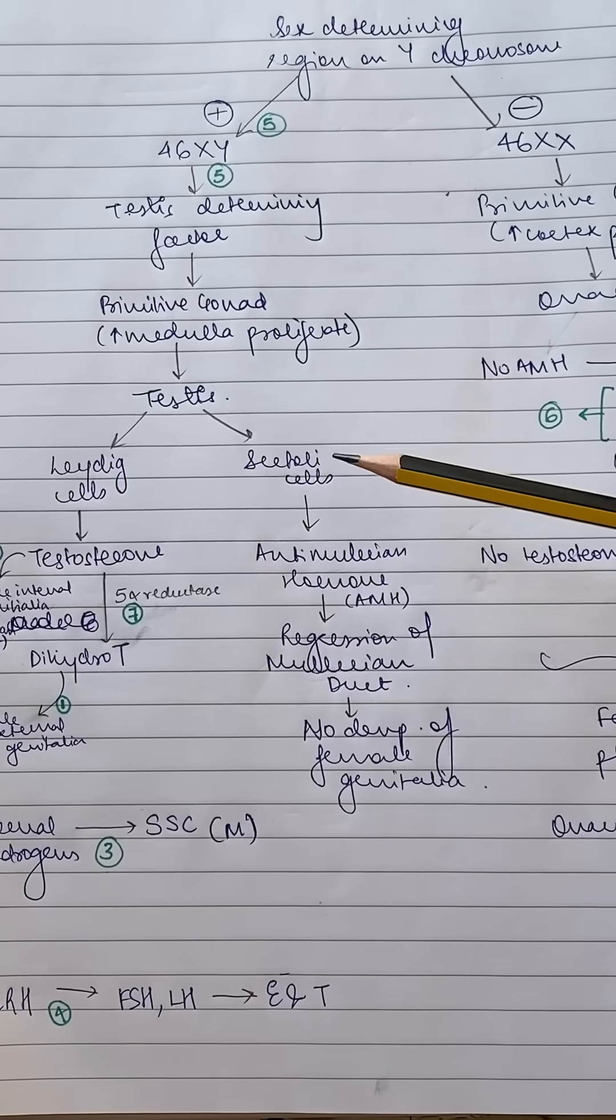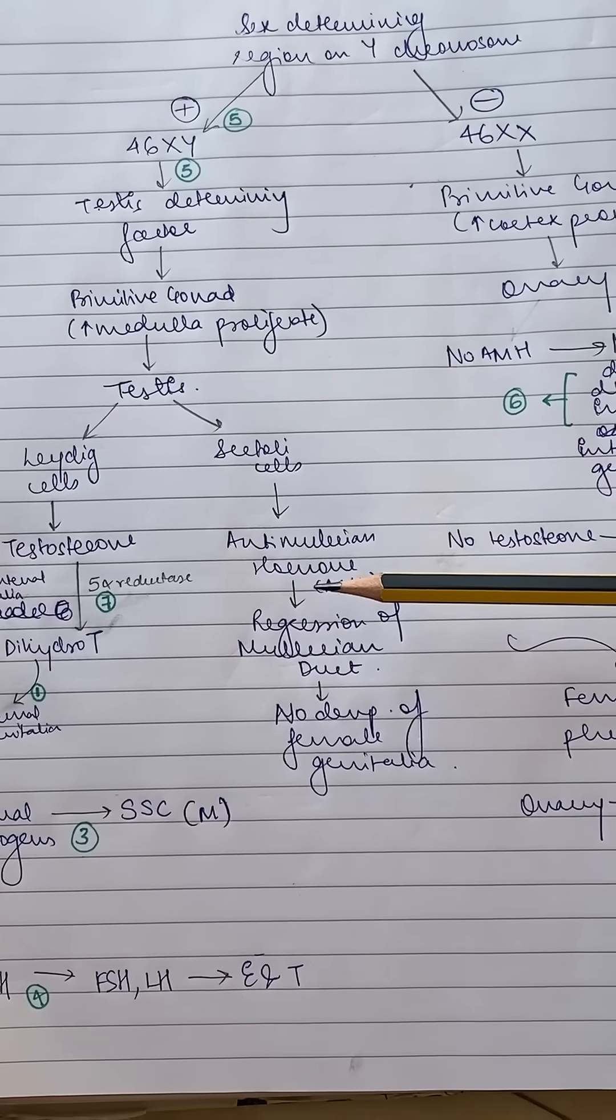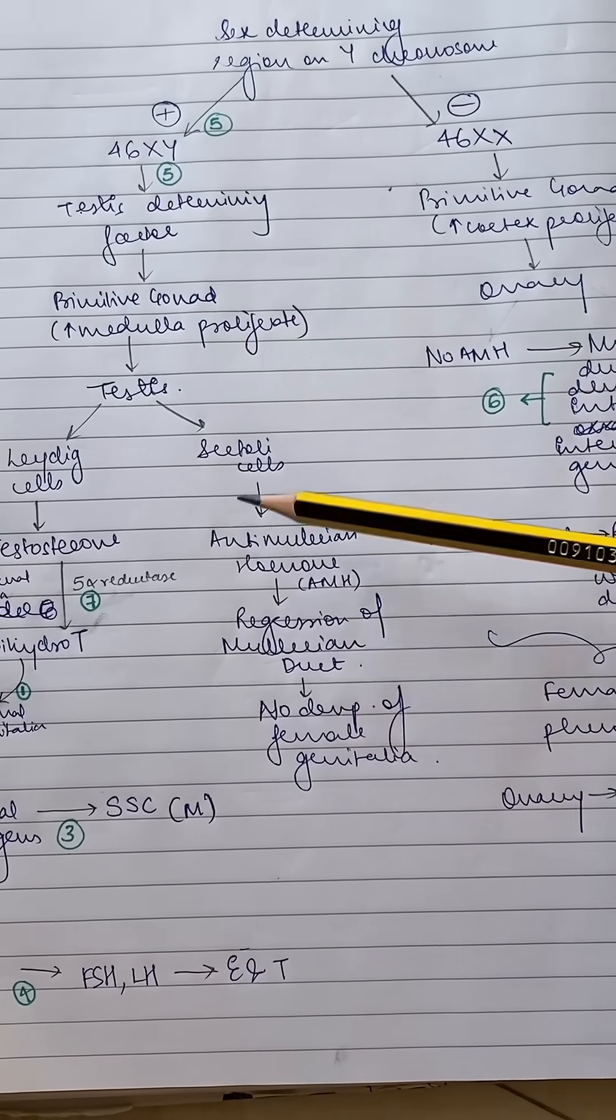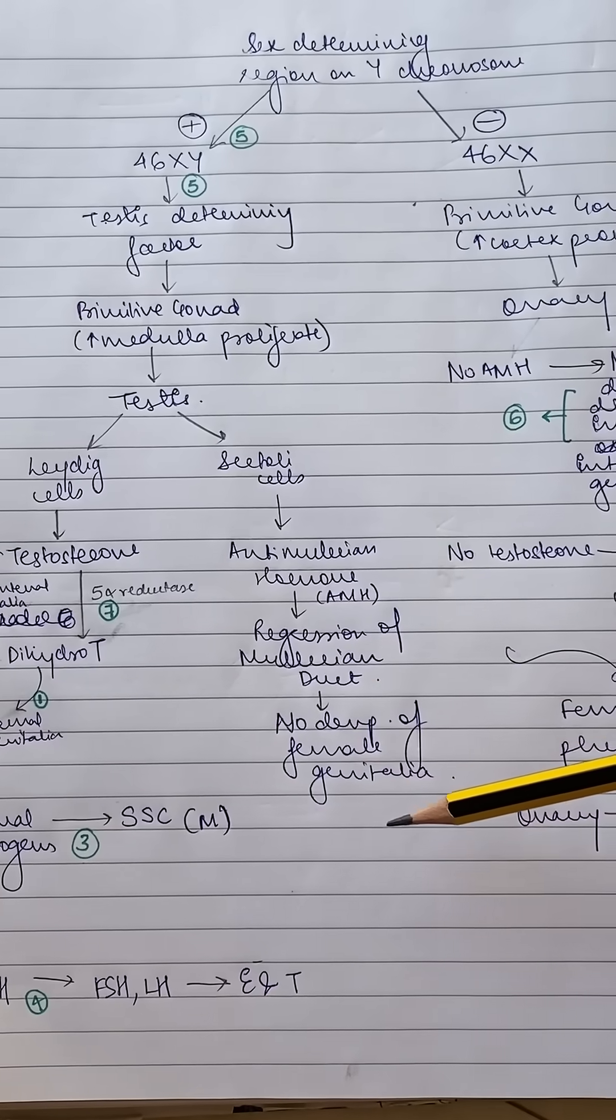Now the Sertoli cells have a specific function. They produce anti-Müllerian hormone. Anti-Müllerian hormone basically prevents the Müllerian ducts from forming uterus and the upper half of the vagina. So there is no development of female genitalia.